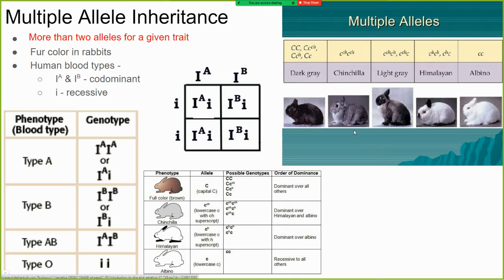There are multiple alleles for rabbit fur color — not just a dominant and recessive. There's this recessive little-c gene, a little-c-h gene, and a big-C gene. Multiple genes make up multiple alleles for this trait, which means there's a wide variety of fur colors in rabbits depending on which genes they inherited.